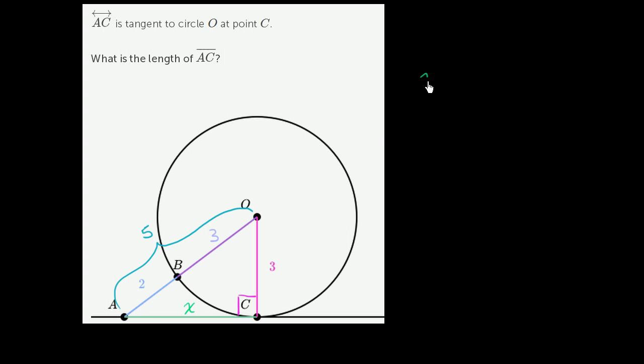So we know that x squared plus three squared—I'm just applying the Pythagorean theorem here—is going to be equal to the hypotenuse squared, which is five squared. And I know this is the hypotenuse; it's the side opposite the 90 degree angle, the longest side of the right triangle.